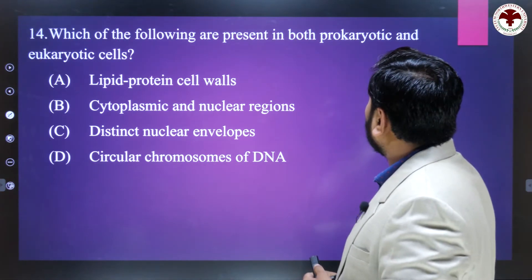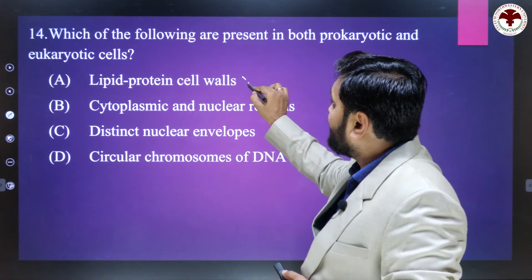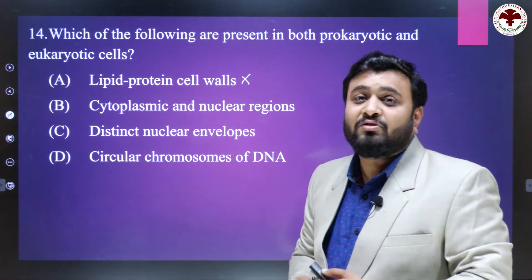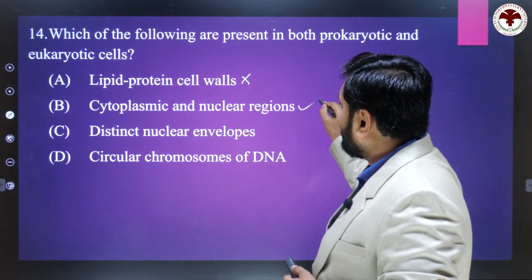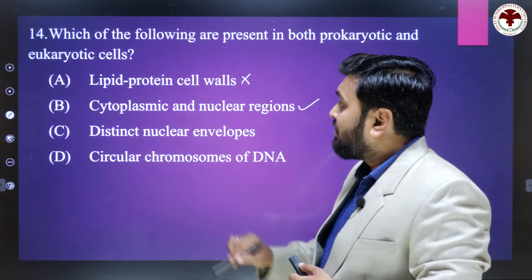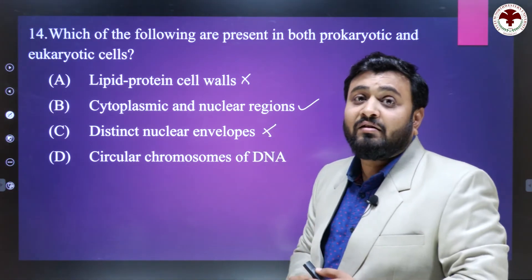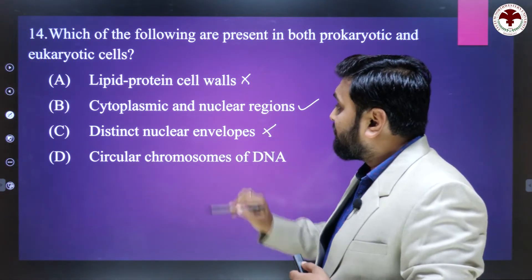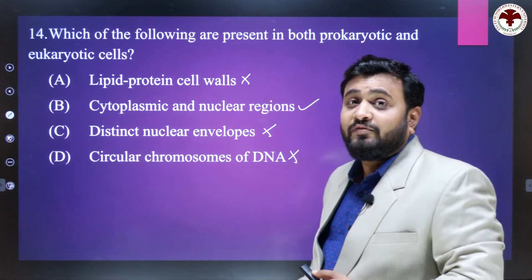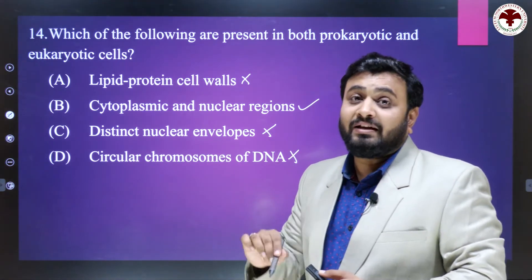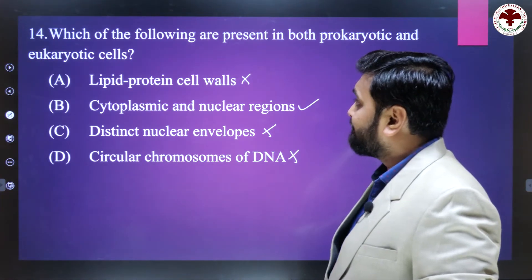Which of the following are present in both prokaryotic and eukaryotic cells? First option, lipid protein cell wall — that is wrong because cell wall is not made of lipid protein. Second, cytoplasmic and nuclear regions — yes, that is true. Third, distinct nuclear envelope — wrong because nuclear envelope is absent in prokaryotic cells. Fourth, circular chromosomes of DNA — present in prokaryotic but absent in eukaryotic. So the right answer is B.